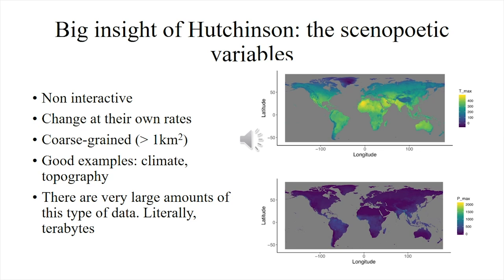We will be using climate data mostly obtained from WorldClim, which is a web page that provides a lot of data, but there are many others and you can use almost whatever you wish. For several major countries in the world, those countries produce their own layers of environmental data. I emphasize: not data related to competitors, to predators, to resources that can be exhausted. One of the major ideas of Hutchinson was to realize that non-interactive variables were different from the others, and non-interactive variables are the ones that we will be using in most of this course.